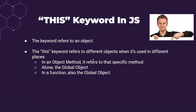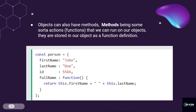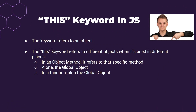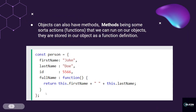The this keyword in JavaScript refers to different objects when used in different places. Inside an object method, it refers to that specific object. If you use this dot first name inside the object, it accesses the object's first name property. However, if used outside the object, this dot first name refers to the global object.